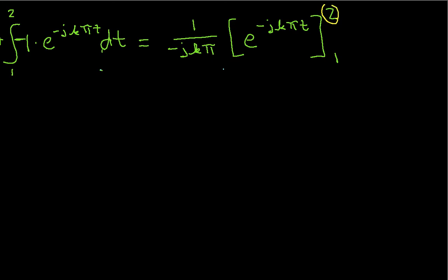When we plug in 2 for t, we get e^(-jk2π). Oh man, I've done it again. This negative sign just keeps wanting to go away. There should be a negative sign up there, too, to account for the fact that I have this negative sign in the integral. So we're going to have here minus e^(-jkπ) times t equals 1.